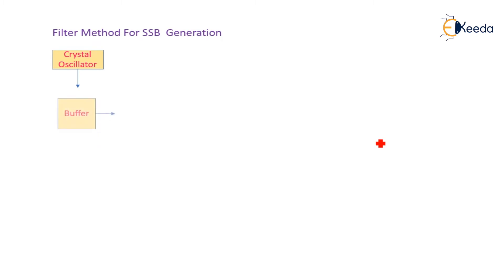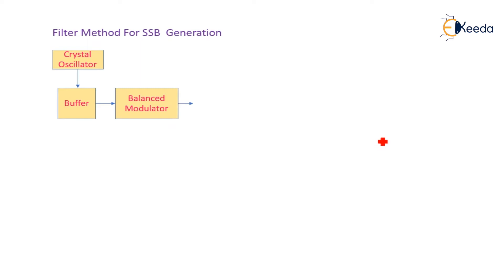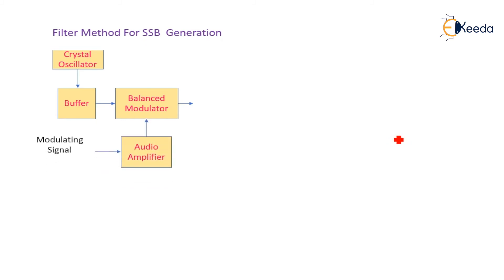A crystal oscillator generates the carrier frequency, which is sufficiently amplified and coupled to the balanced modulator. The balanced modulator is a nonlinear resistance device. The second input to the balanced modulator is the modulating signal, which is sufficiently amplified with a power amplifier. The output of the balanced modulator is a double sideband with suppressed carrier (DSB-SC).